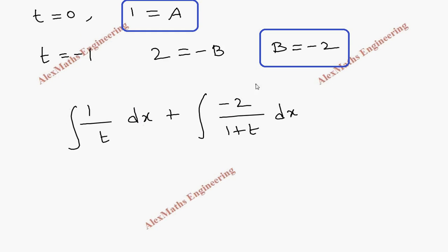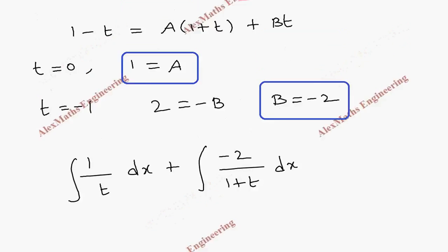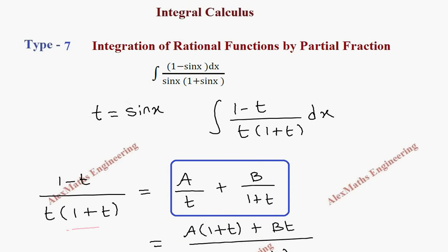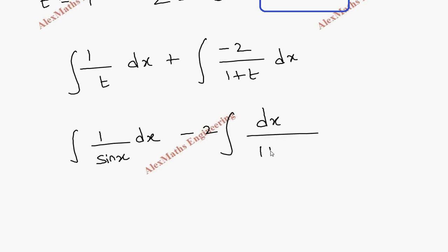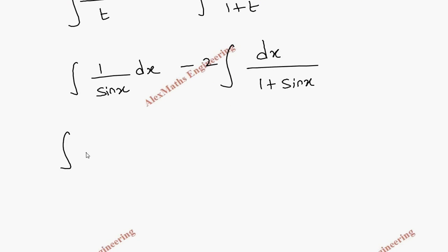Since the integration is with respect to x, we replace t with sin x. So we get the integral of 1 over sin x dx minus 2 times the integral of dx over (1 plus sin x). The first term integrates as cos x.